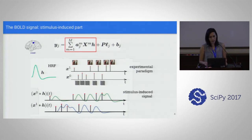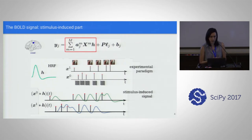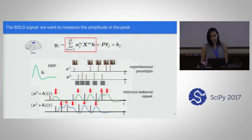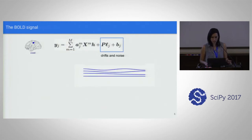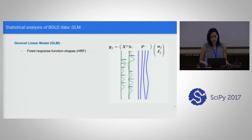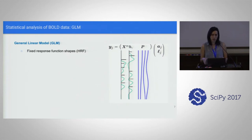The way we model the signal is by doing the convolution between the response functions and the timings. We do this because we don't want to look at the signal when the events happen; we want to look at the signal when we see a change in the BOLD effect, which will be some seconds later. We measure the amplitude of the signal at these peaks. Besides the stimulus-induced part, there are also drifts and noise that we model and want to remove. The classical way of analyzing BOLD fixes the hemodynamic response function to a canonical shape, making the problem linear, solvable with a general linear model and classical statistics.